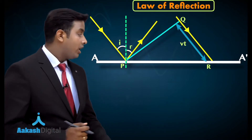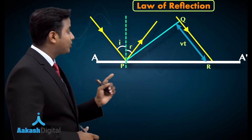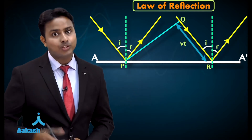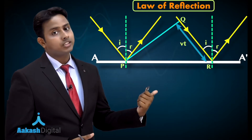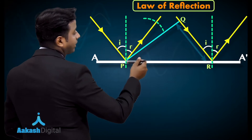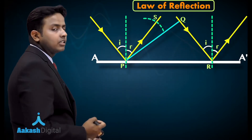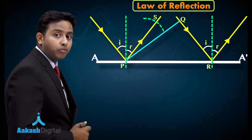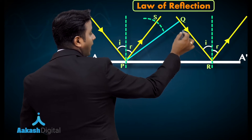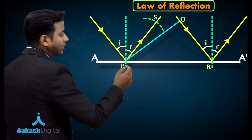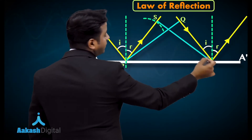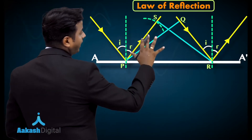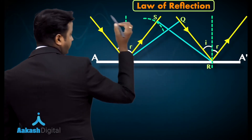In the same time interval, a new wavefront emanating from point P travels the same distance vt. Since A-A dash is a reflecting surface, it reflects secondary waves back in the upward direction. Making an arc of radius vt, we get the curve PS as the secondary wavelets from P. Taking the tangent of the two secondary wavelets — one from Q reaching point R, and one from P reaching point S — we get the new reflected wavefront RS.